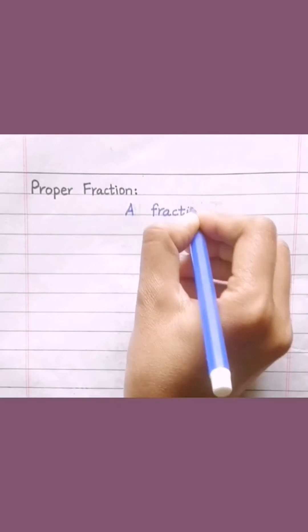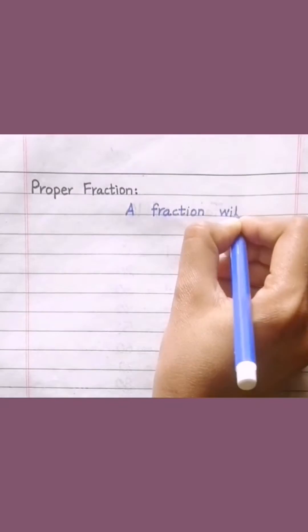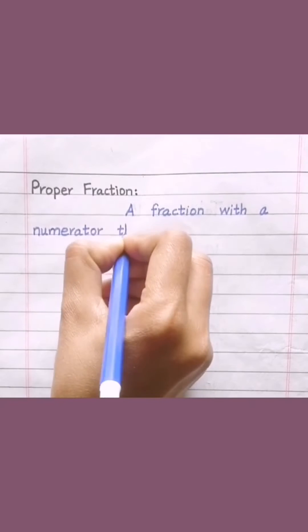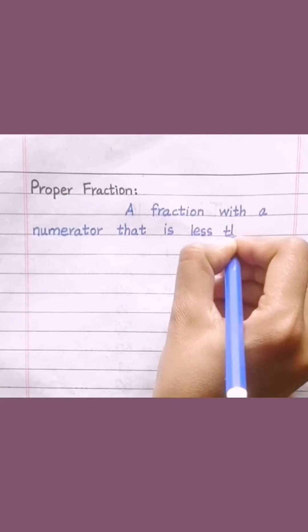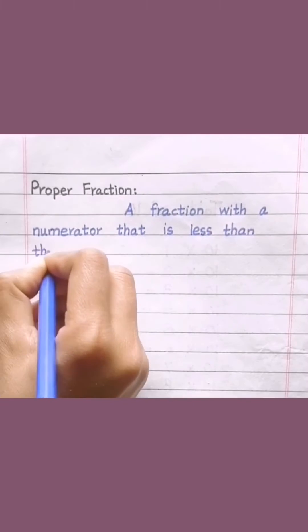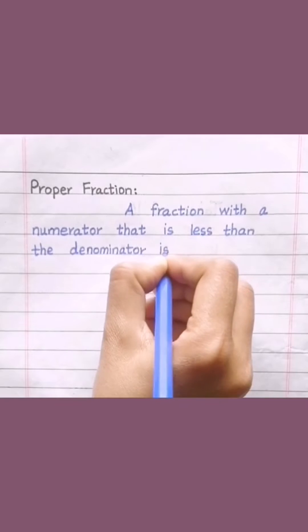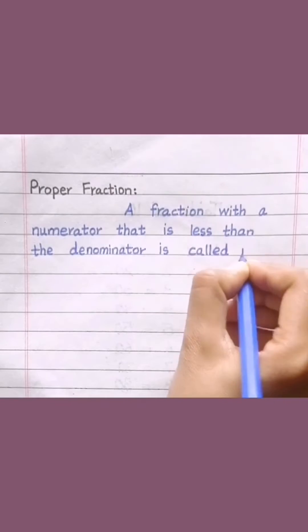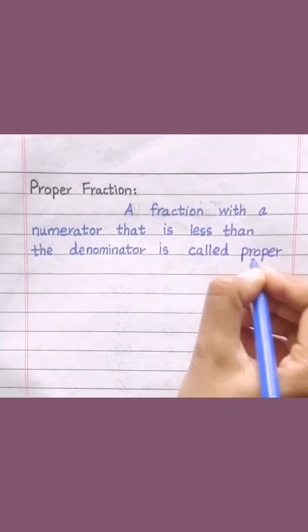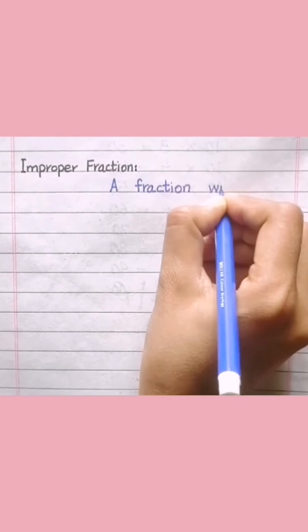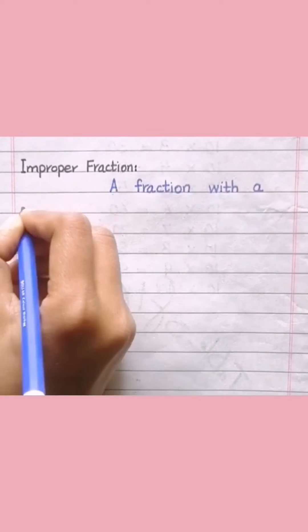Proper fraction. A fraction with a numerator that is less than the denominator is called a proper fraction. For example, 1 by 7.